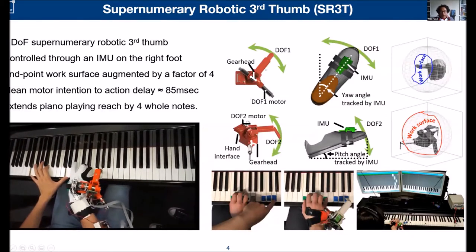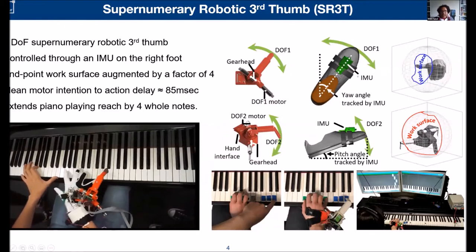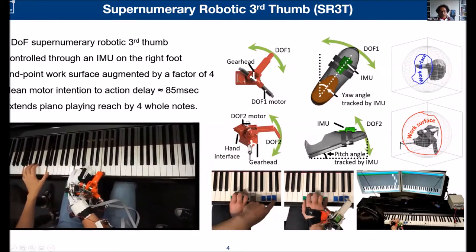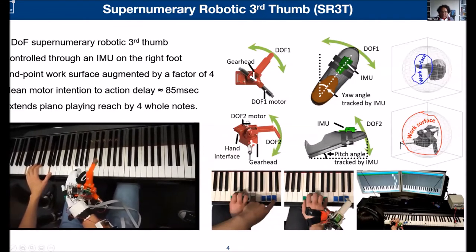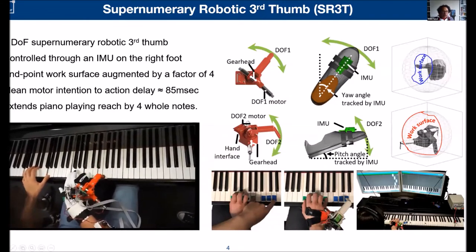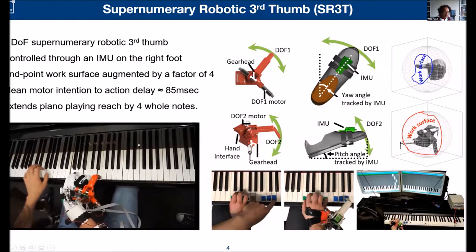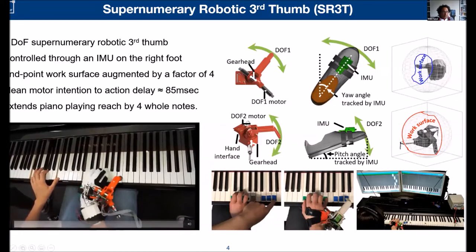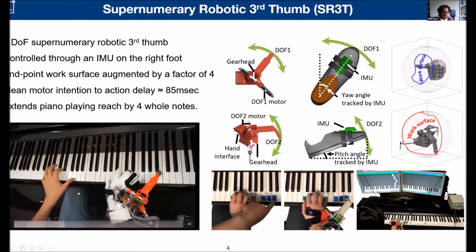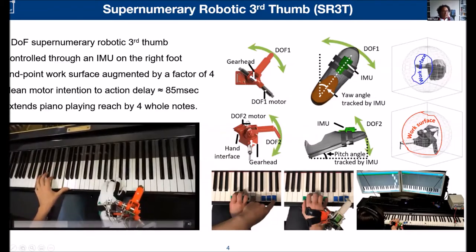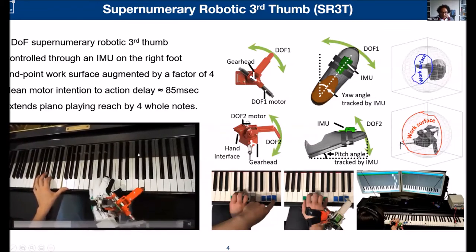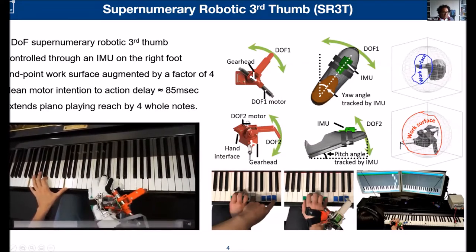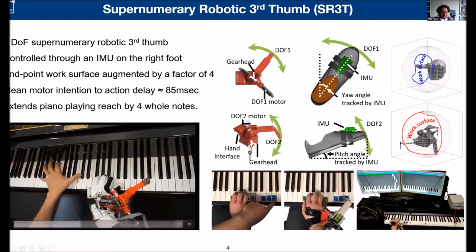It has two degrees of freedom on fast brushless motors. It is basically teleoperated by an IMU that sits on the right foot of the user, so as to allow a fast readout of movements. What you're seeing here is the performance of a naive piano player.